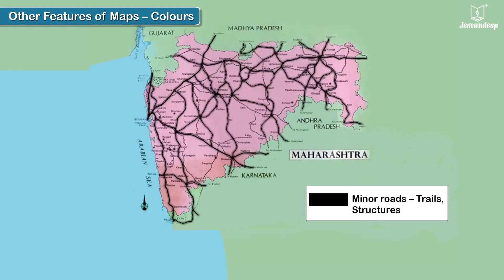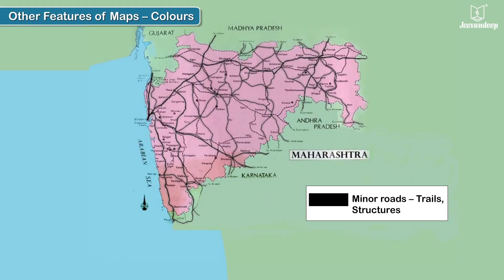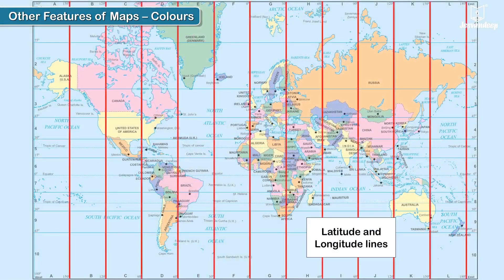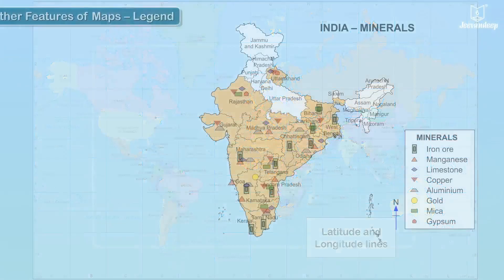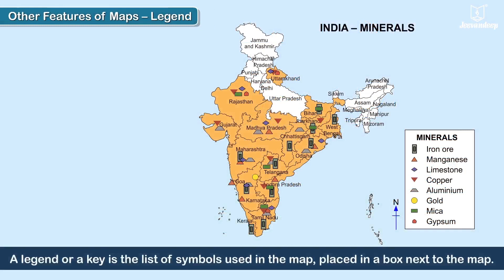Black represents minor roads, trails, structures, latitude and longitude lines, etc. A legend, or a key, is the list of symbols used in the map, placed in a box next to the map.